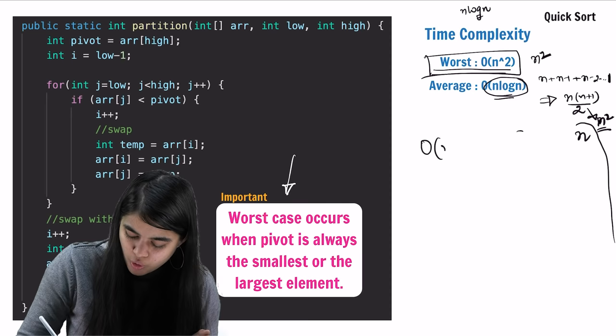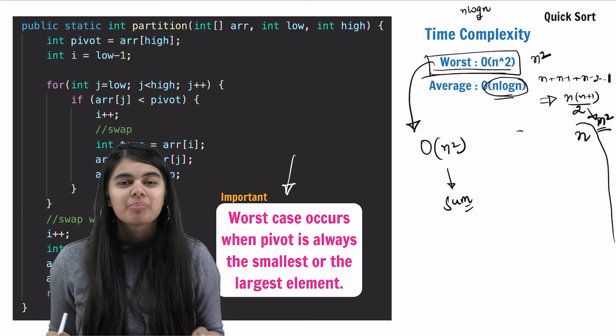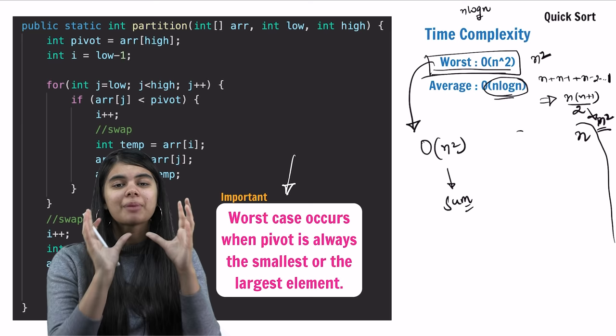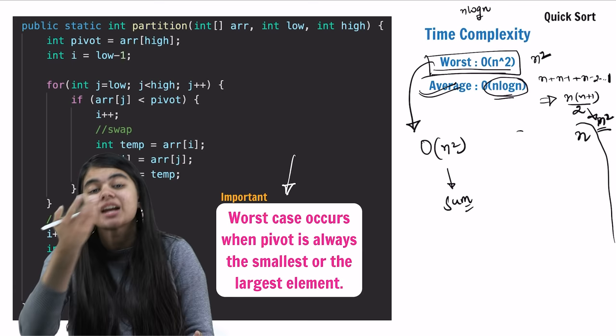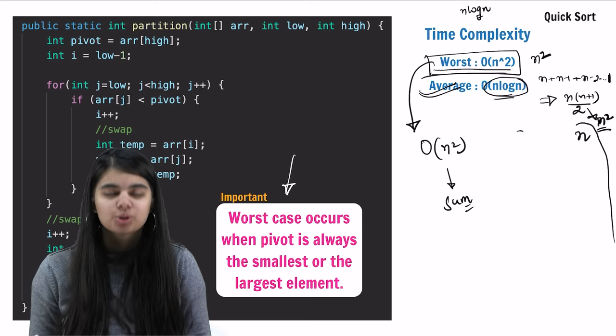More precisely, the time at each level is n, then n-1, then n-2, down to 1. Summing this arithmetic progression: n + (n-1) + (n-2) + ... + 1 = n(n+1)/2, which gives O(n²). However, quicksort is still used because it does not use extra memory (no extra array) unlike merge sort. The worst case rarely occurs in practice. When to use merge sort: when you have extra memory and need guaranteed O(n log n) even in worst case. Use quicksort when average cases dominate and memory is limited. Notes are available in the description box. Keep learning and keep practicing.